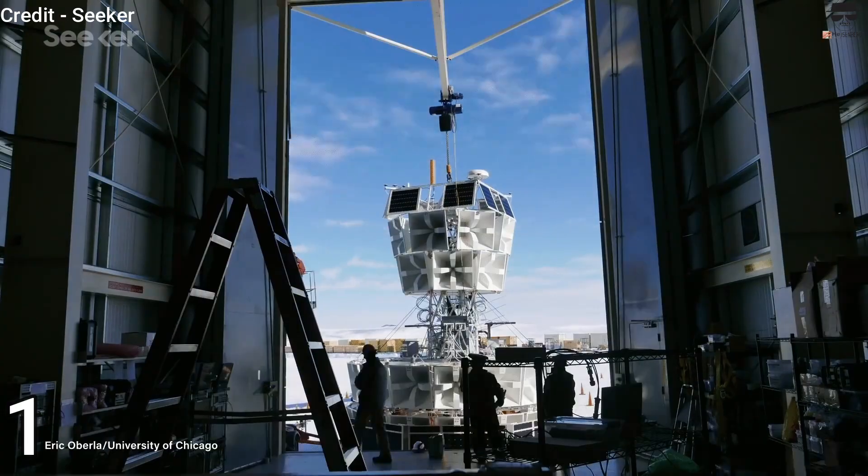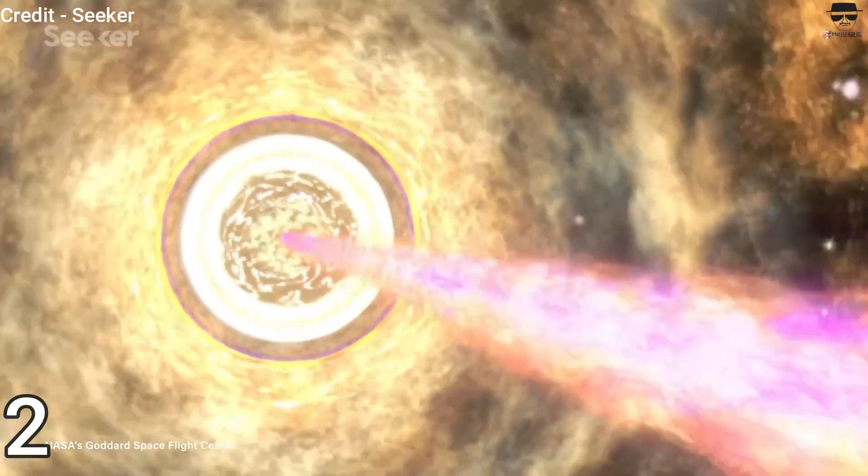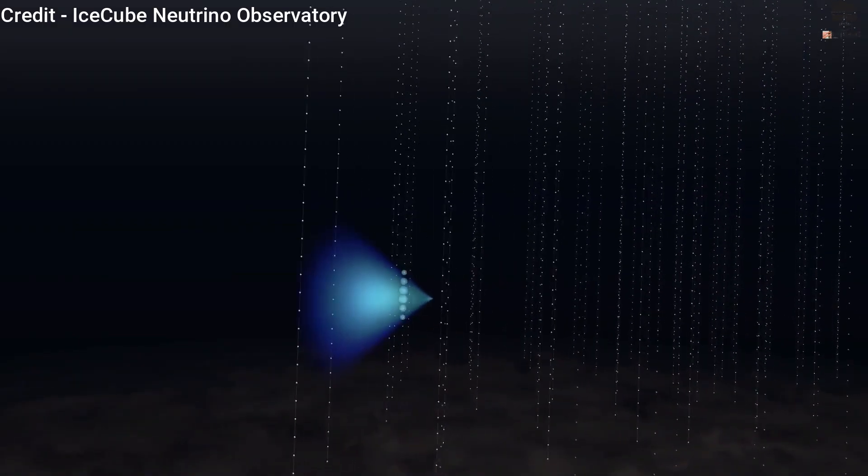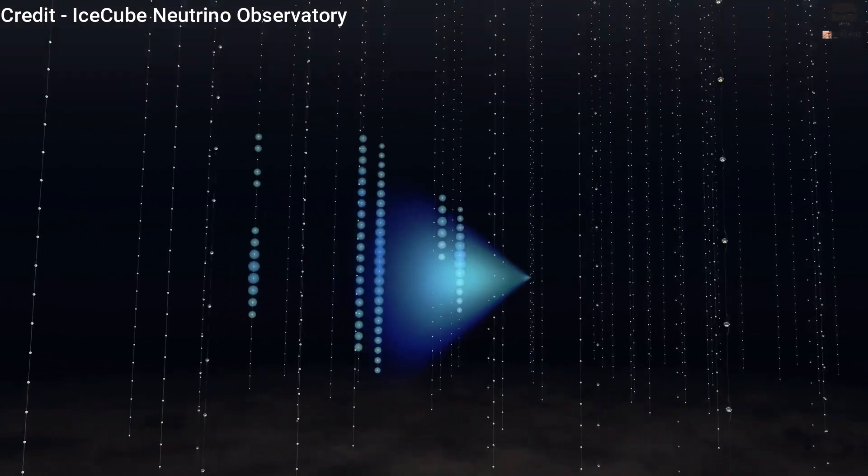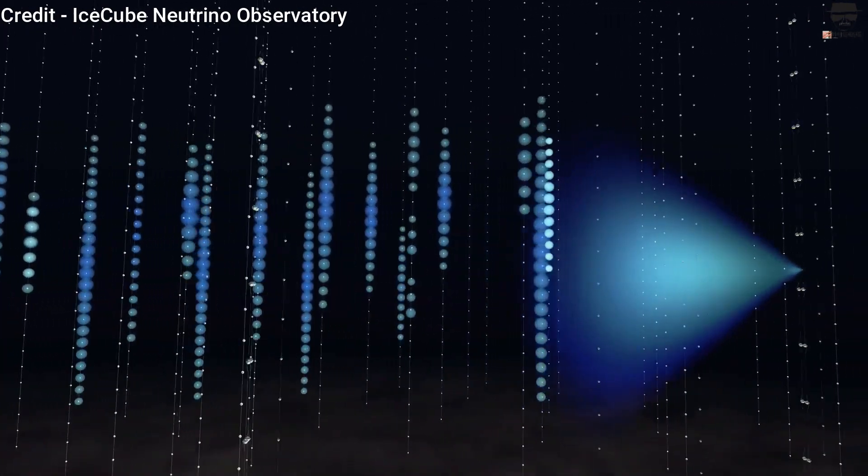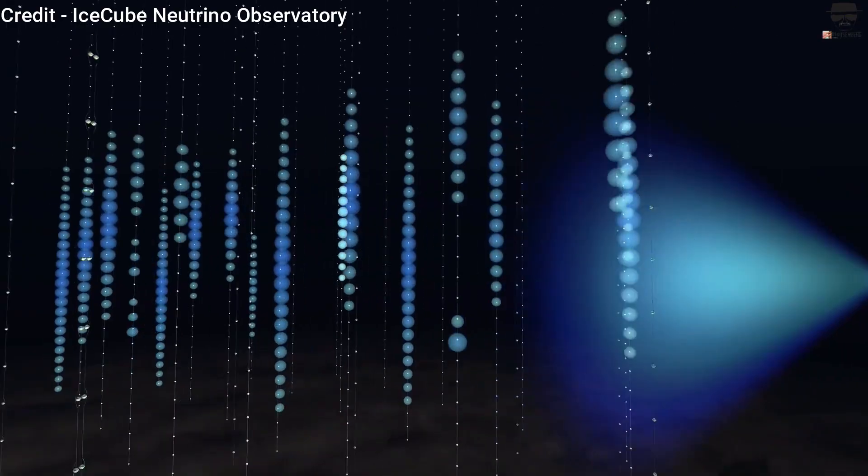Scientifically, this means that Anita saw radio signals that it could not explain. Their leading hypothesis was that high-energy tau neutrinos are traveling upwards through the Earth, and that hypothesis was refuted by IceCube observations, teaching us there is no astrophysical point source out there that is creating the particles that Anita is indirectly seeing.